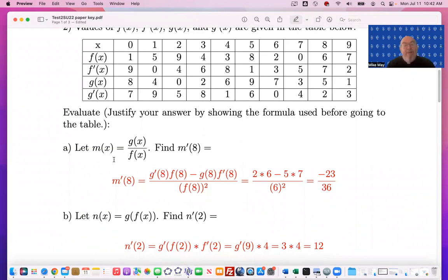And so the derivative of g over f is g prime times f minus g times f prime over f squared. Notice it's f on the bottom rather than g, so I need to make my formula work that way. I evaluate everything in terms of 8, and then I simply notice what the values at 8 are.